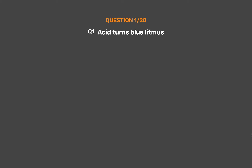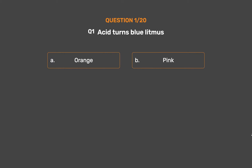Question number 1. Acid turns blue litmus — Option A: Orange. Option B: Pink. Option C: Green. Option D: Red.